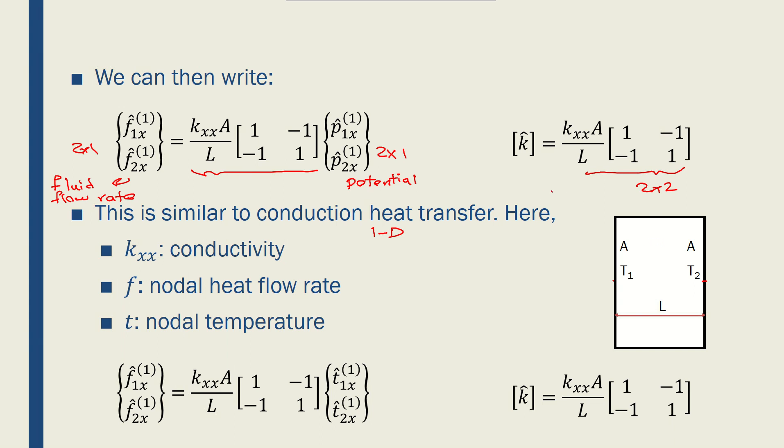We can say that the stiffness matrix of such a problem is equal to this. Here, F's are the nodal heat flow rate, and the T's are temperature, and kxx would be conductivity of the material. So we can write the same form of the stiffness matrix for the 1D conduction heat transfer. So we found the procedure to find the stiffness matrix for the 1D fluid flow rate and 1D heat transfer in conduction.